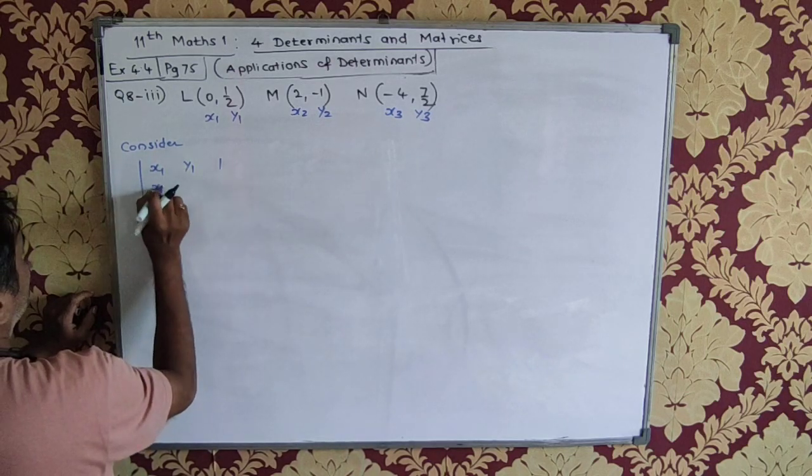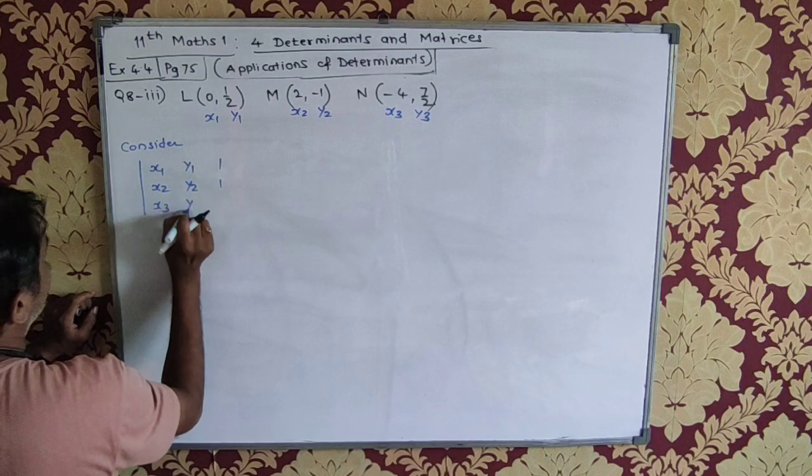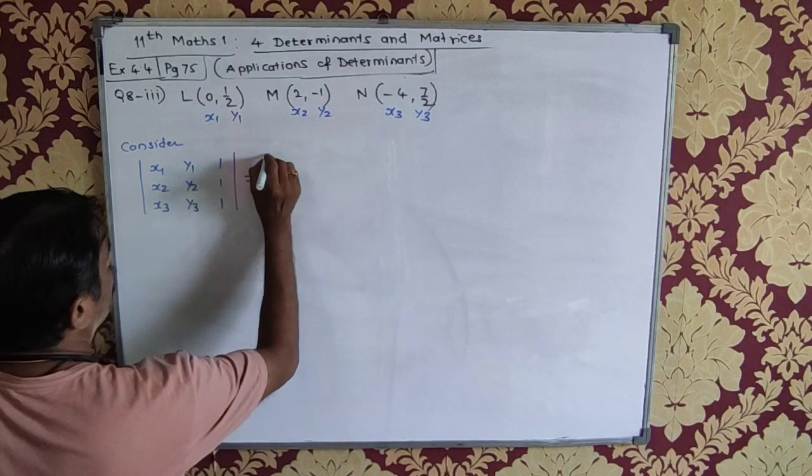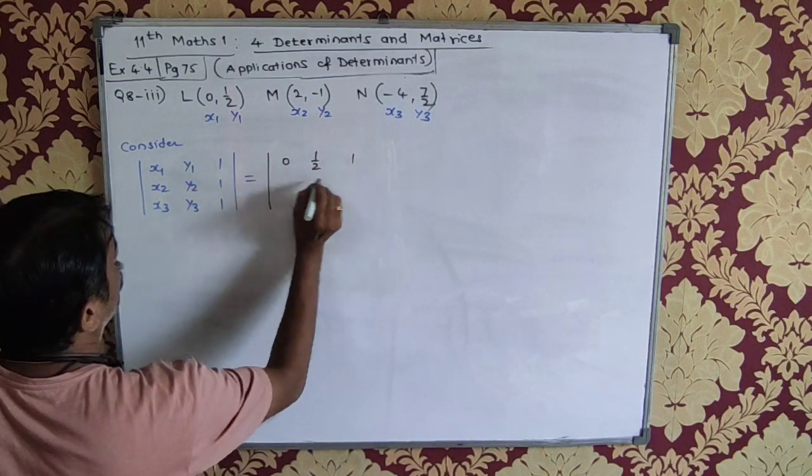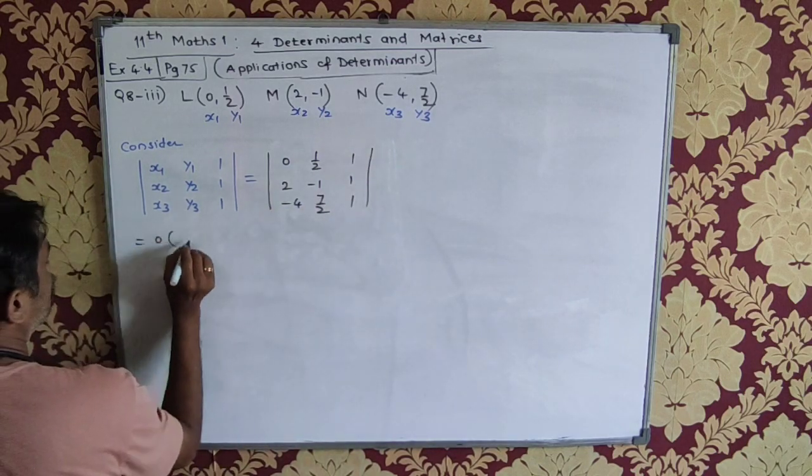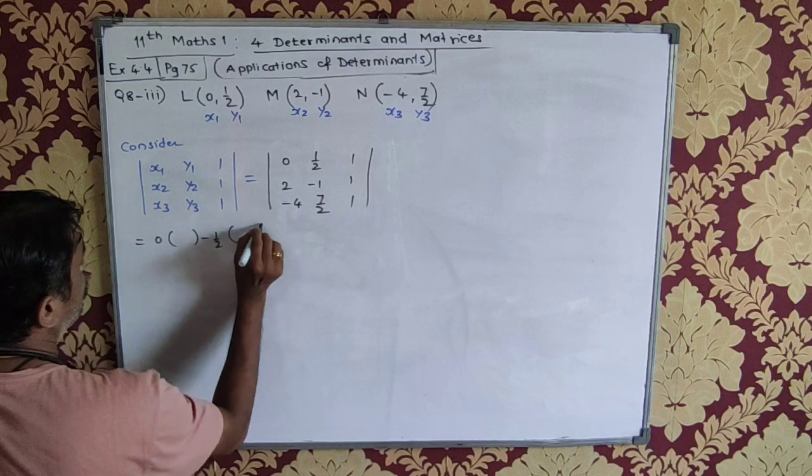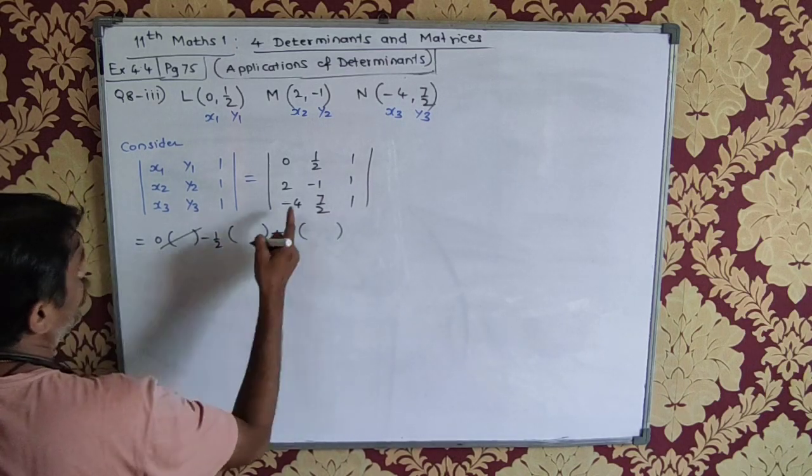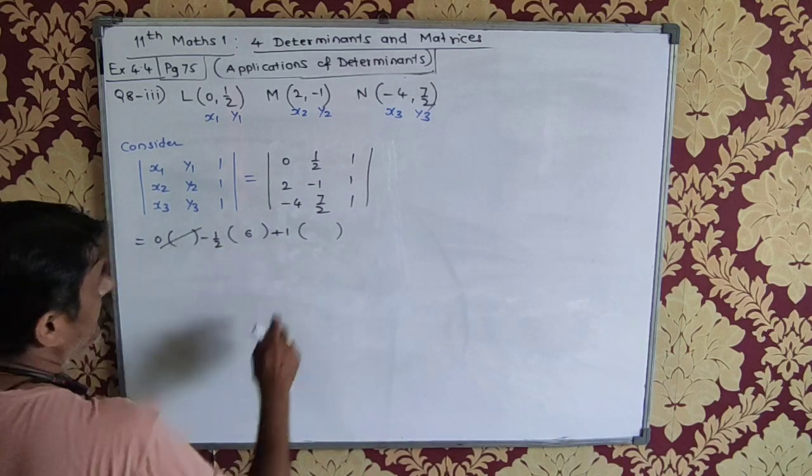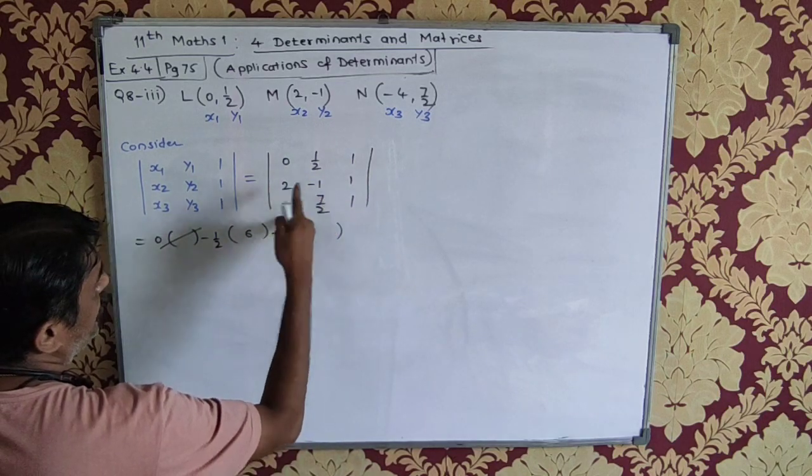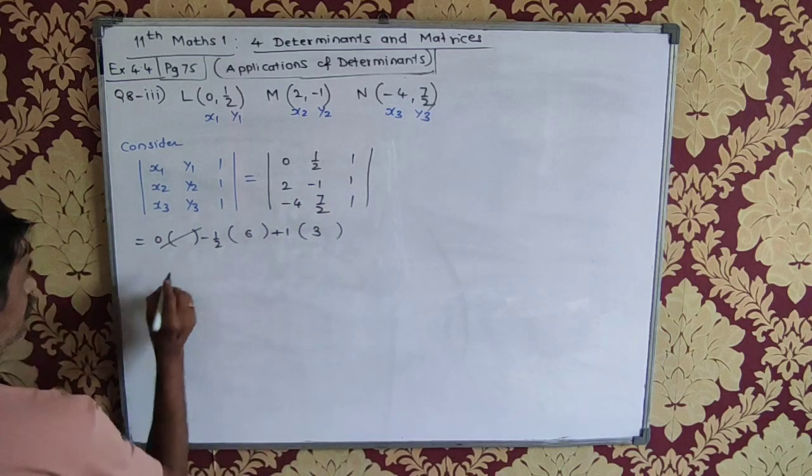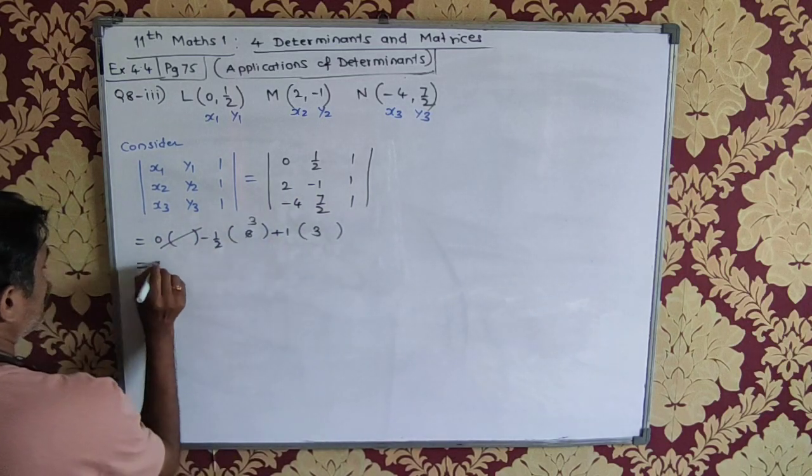And we consider the determinant x1, y1, 1, x2, y2, 1, x3, y3, 1. That is equal to 0, half, 1, 2, minus 4, 1, 7, 3, 1. 0 goes. Minus half into 2 minus minus 4, 2 plus 4 is 6. Plus 1 into this product minus this product. Now when you take this product, it will be 7 minus 4 is 3. This is minus 3 plus 3 is equal to 0.